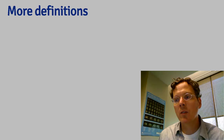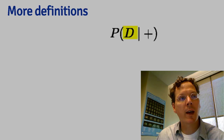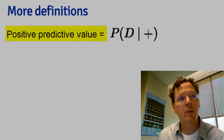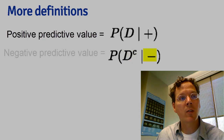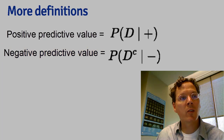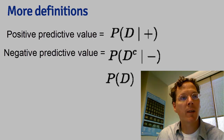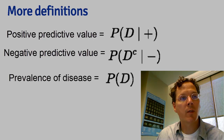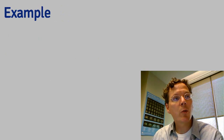If you happen to have a positive test, the number that is most of concern to you is the probability of having the disease given that positive test — the so-called positive predictive value. If you have a negative test, you're interested in the probability of not having the disease given that negative test — the so-called negative predictive value. In the absence of a test, the probability of having the disease is the so-called prevalence of the disease.